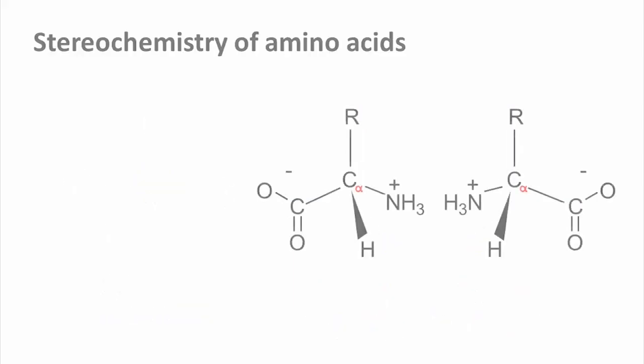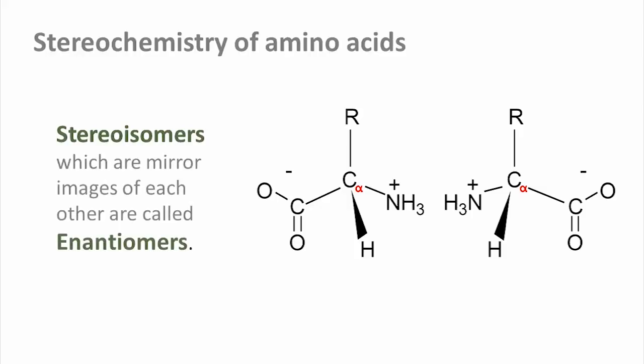Amino acids are theoretically possible in two different configurations, which are mirror images of each other. Two molecules that have all the same connections of atoms but differ in their 3D arrangement are called stereoisomers. If these stereoisomers are exact mirror images of each other, as these two molecules are, we call them enantiomers. Stereoisomers are not enantiomers if there is more than one asymmetric carbon atom. In that case, different configurations are possible separately at each of them, so not all of the possible isomers will be mirror images of each other. That is actually the situation with sugars, as we are going to see later.